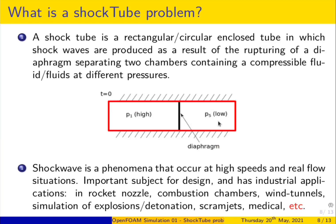A shock wave is a phenomenon that occurs at high speeds in real compressible flows with boundary layers. This is an important subject for design and industrial applications such as rocket nozzles, combustion channels, wind tunnels, and simulations of explosions and detonations. It is also used in the design of intakes for scramjet and ramjet engines, which don't have compressors and turbines — instead, they use a series of shock waves to increase the pressure ratio required.